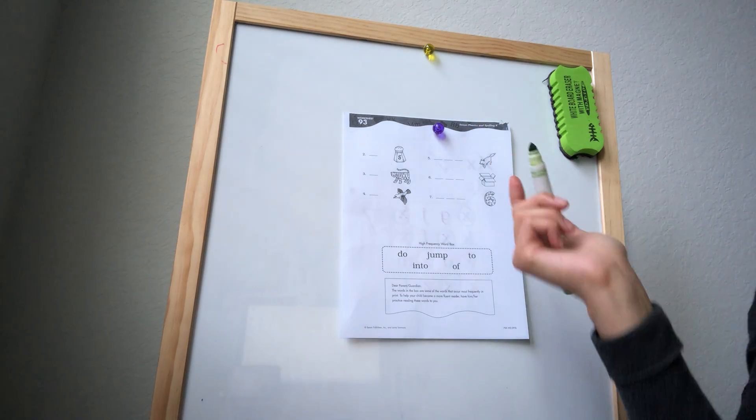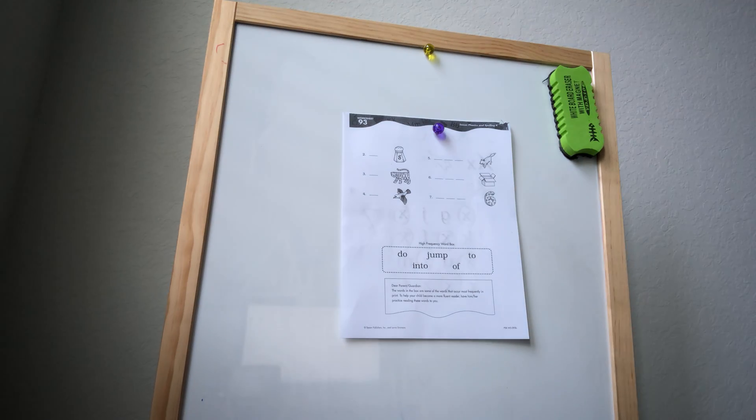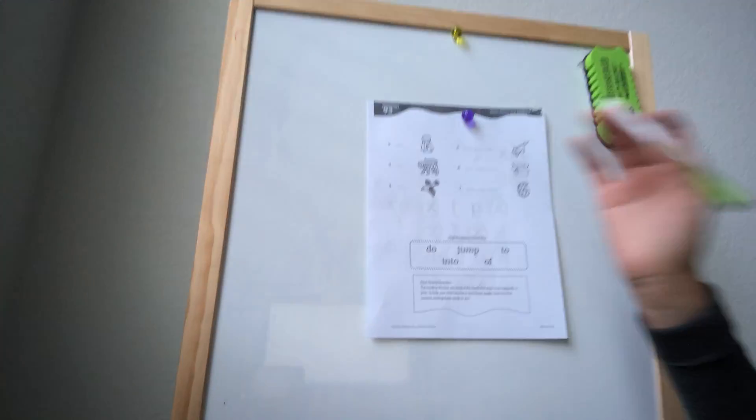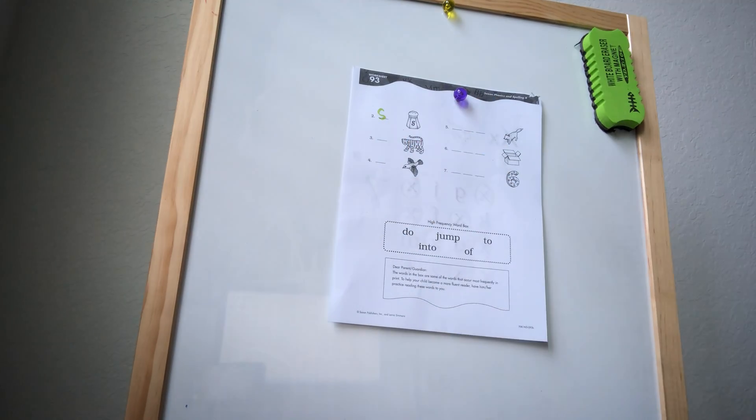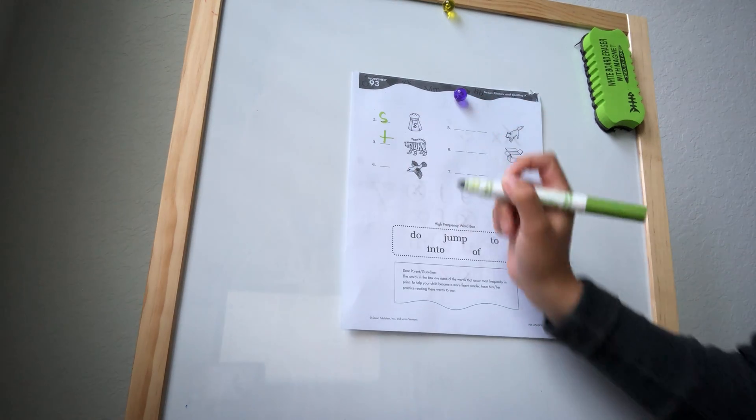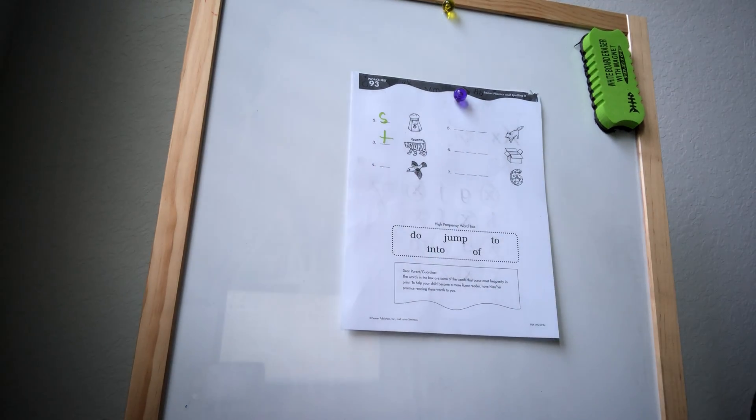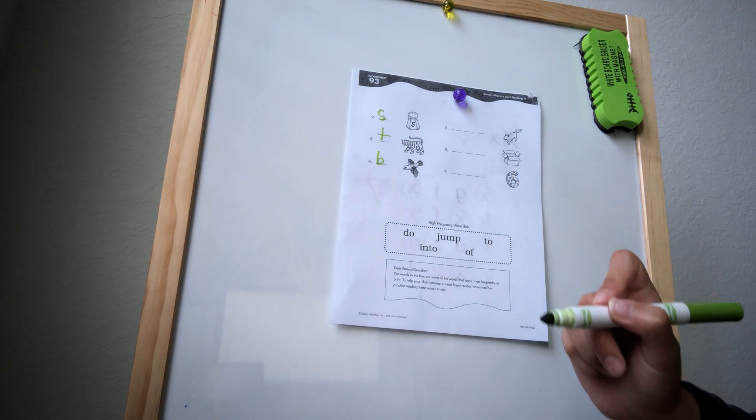Okay. On the back, we have to write the first sound that we hear. So this is a salt shaker. So, I heard an S. Number three, that's a tiger. I heard a T. And number four, that's a bird. That's a B.